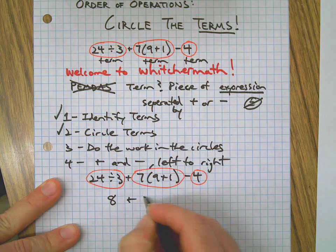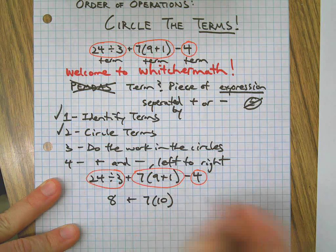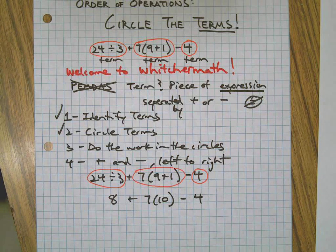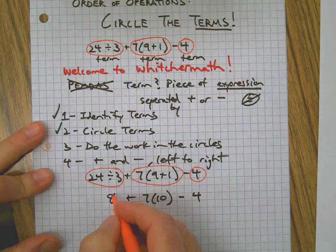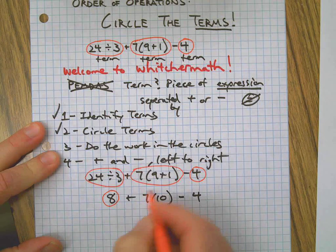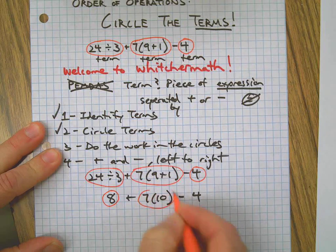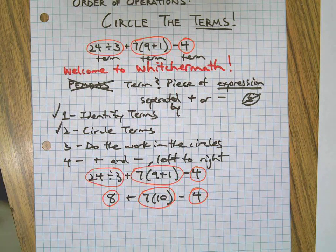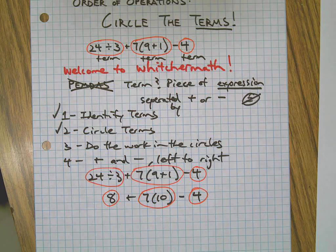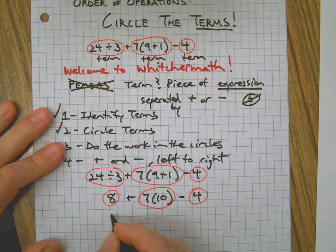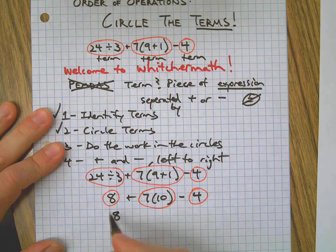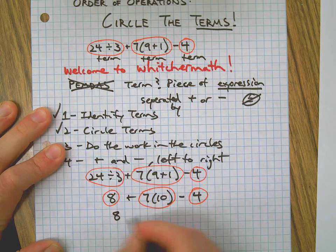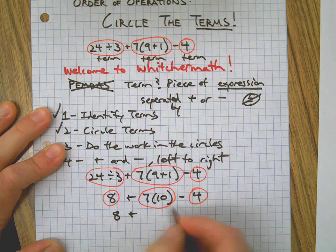We circled them. Do the work in the circles. 24 divided by 3 is 8, 9 plus 1 is 10, and 4 is just 4. I'm circling as we go just to show you the process that we're going through. I apologize if writing 8 more than once offends you, but it shows all the steps.